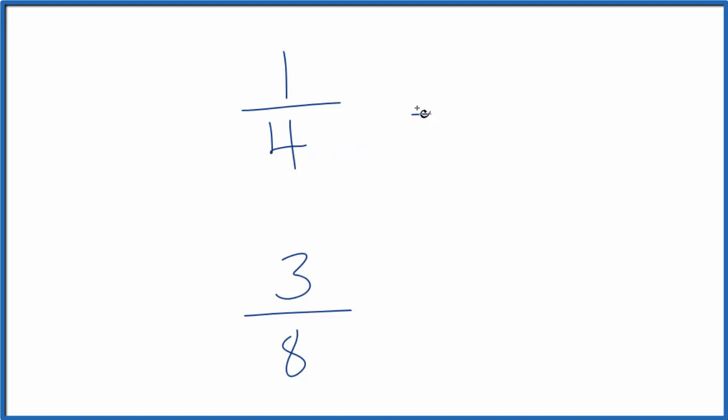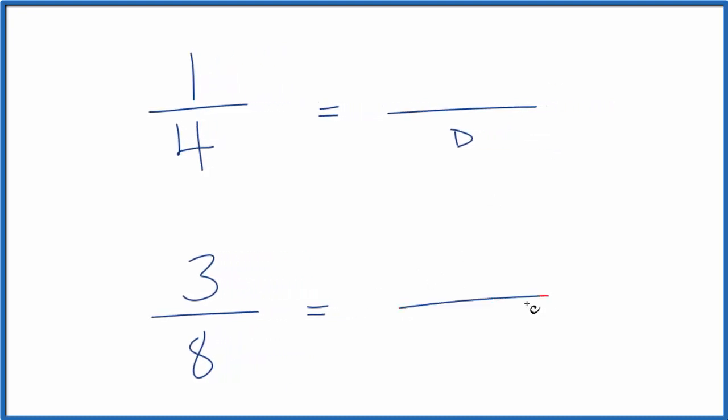First, if we could get a denominator—that's the number on the bottom—that was the same for both of these fractions, then we could compare the numerator, the number on top, and tell which one is the larger fraction.